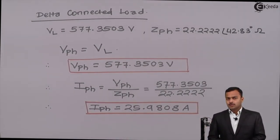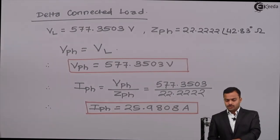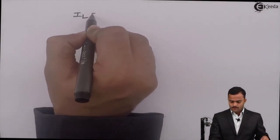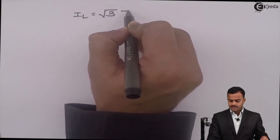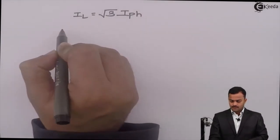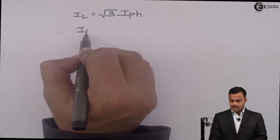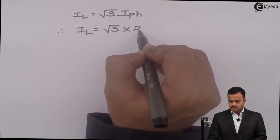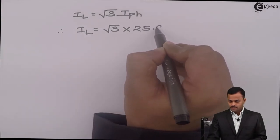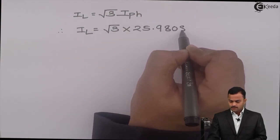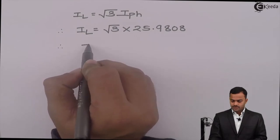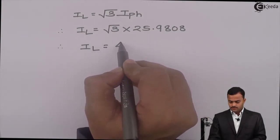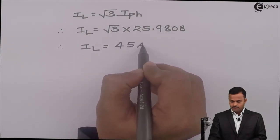For a delta-connected load, line current equals √3 times phase current. Therefore IL = √3 × 25.9808 = 45 ampere.